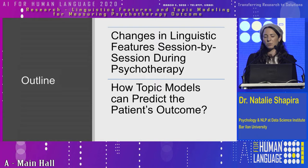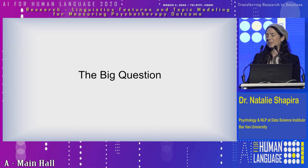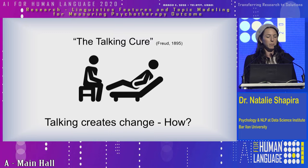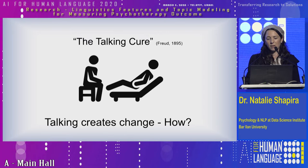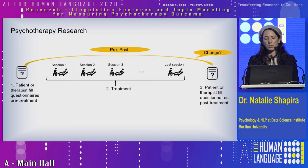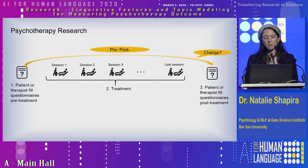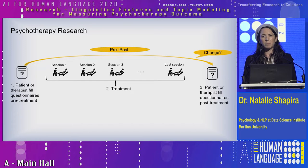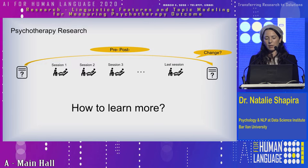And we start with the big question. Freud coined the term 'the talking cure.' We know that talking makes change, but how? Psychotherapy research aims to reveal those mechanisms of change. The traditional ways of researching this question are by having clients and therapists fill questionnaires before and after the treatment, and checking whether there are correlations between the outcomes and other process questions. And the question is, can we learn more?